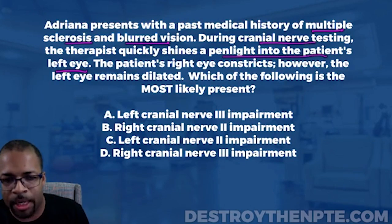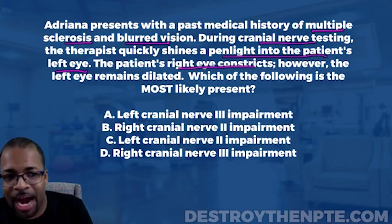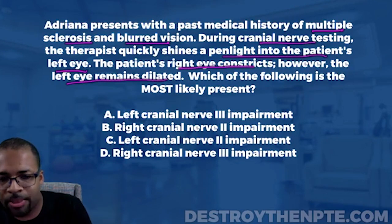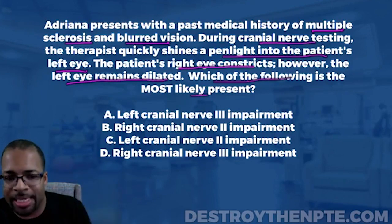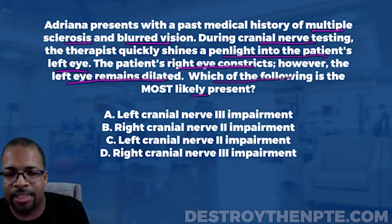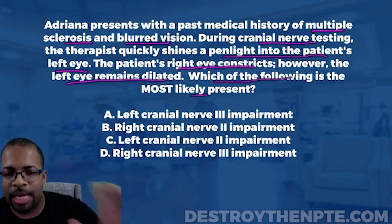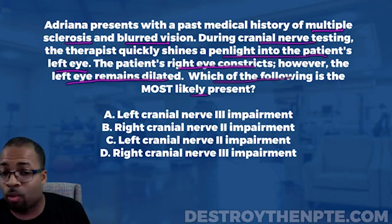The question says the patient's right eye constricts — the opposite eye. However, the left eye remains dilated. So which cranial nerve is impaired, and why is this a problem? Let's recap: we shone the light into the left eye, the right eye constricts, but the left eye doesn't. This is abnormal — but why?